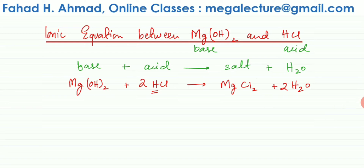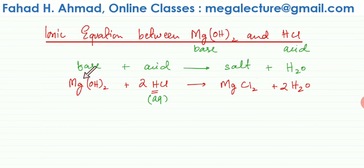Now we're writing an ionic equation, so here are the steps. Step 1 is to figure out the solubility of the substances. Acids are all aqueous — always in solution. For magnesium hydroxide, from the solubility table, only Group 1 hydroxides and those at the bottom of Group 2 are soluble. Magnesium is at the top of Group 2, so it is not soluble — magnesium hydroxide is a solid.